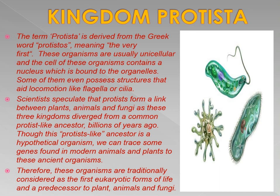The term 'Protista' is derived from the Greek word 'Protistos', meaning 'the very first one.' These organisms are usually unicellular, and their cells contain a nucleus bounded by a membrane, making them eukaryotic. Some of them even possess structures that aid locomotion, like flagella or cilia.